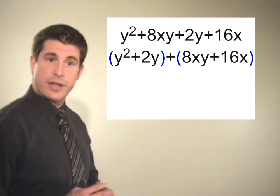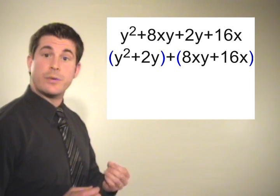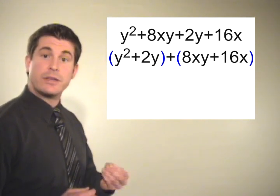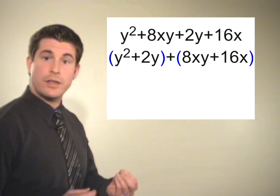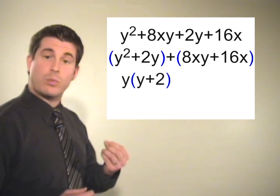In the second step, we're going to remove the greatest common factor from each group. So in our first group, the greatest common factor is going to be a y, because that is a term that they both share. So we're going to take that out, and what we leave behind is y plus 2.